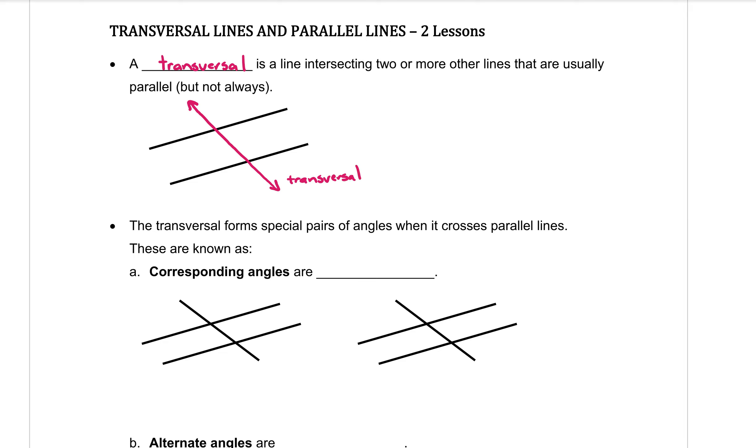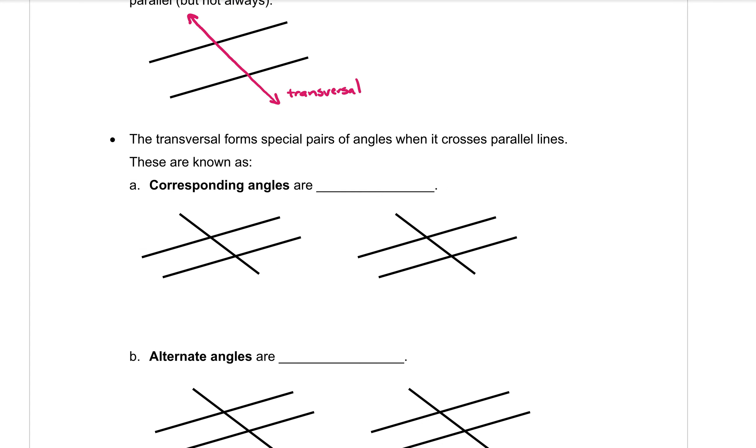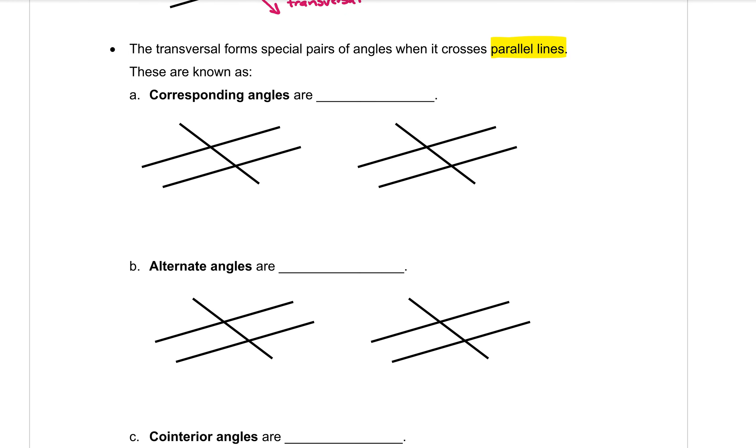Okay, now the transversal forms special pairs of angles when it crosses parallel lines. So this is definitely just for parallel lines. There are three types of angles that we need to know about. The first type of angle we call corresponding angles. Now corresponding angles are always equal.